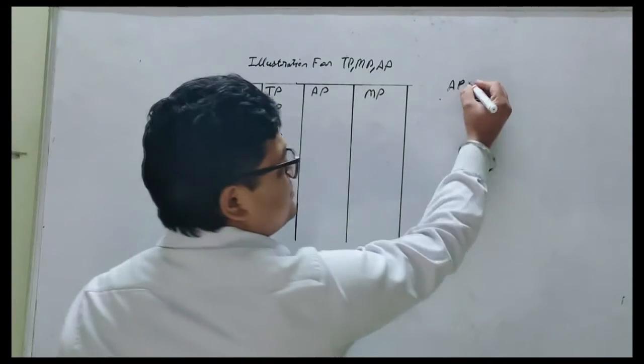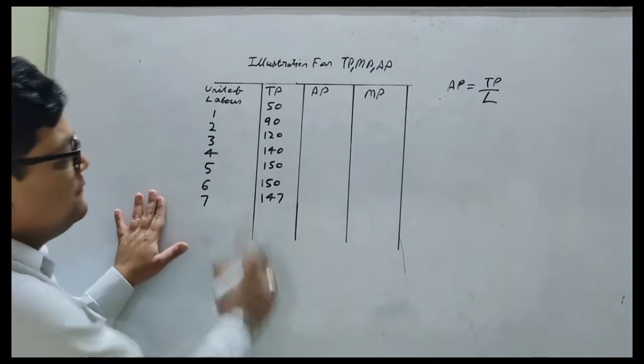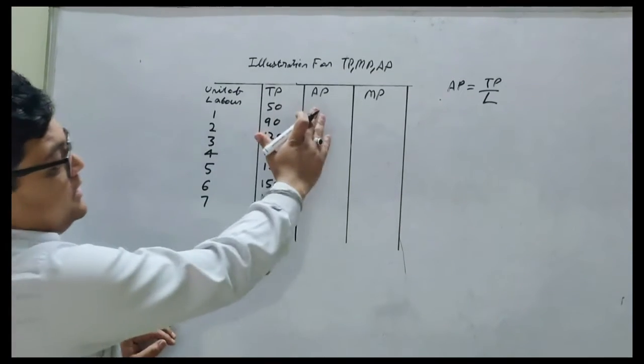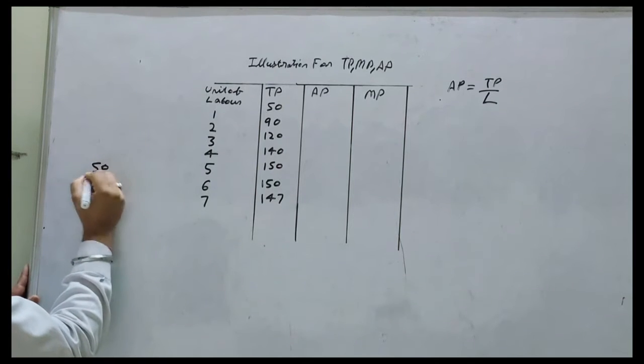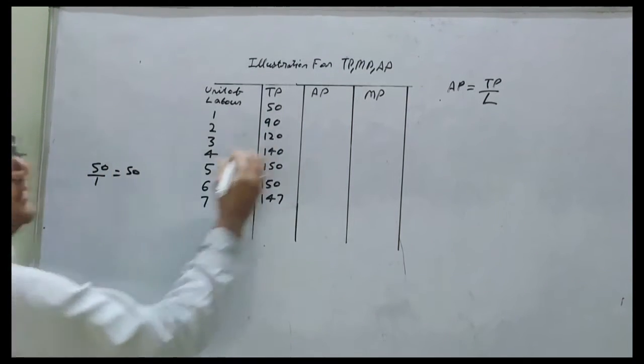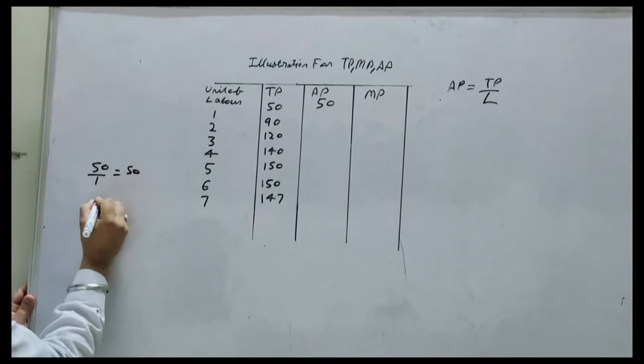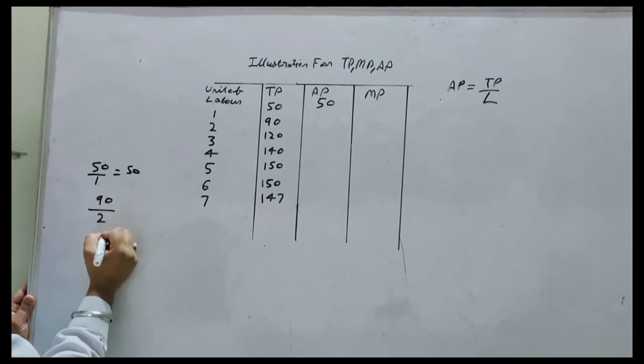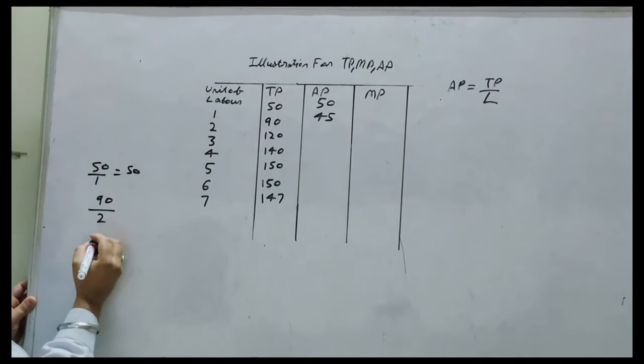So as you all know, average product formula is total product divided by n. Let's start. First, average product: unit of labor is 1 and TP is 50, so 50 divided by 1 equals 50. So first AP will be 50. Second is total product is 90 and unit of labor is 2, which means 45. Third, it will be 120 divided by 3, which means 40.